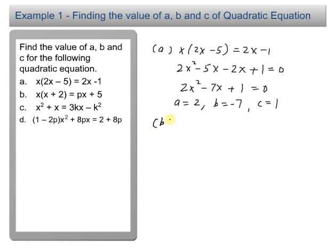For B here, you have x times x plus 2 equal to px plus 5. Again, this is not in the general form. You expand this. You have x squared plus 2x minus px minus 5 equal to 0.